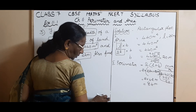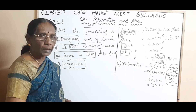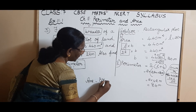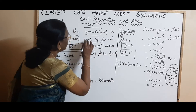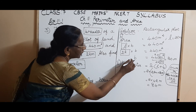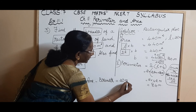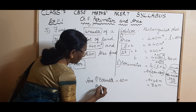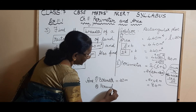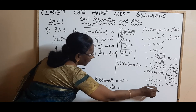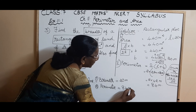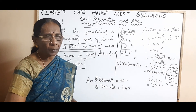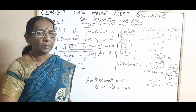Now write the answer. First answer: breadth = 20 meter. Second answer: perimeter = 84 meter. Both are lengths, so write the correct unit. I think you may have understood this question. Stay safe. Thank you, children. God bless you.